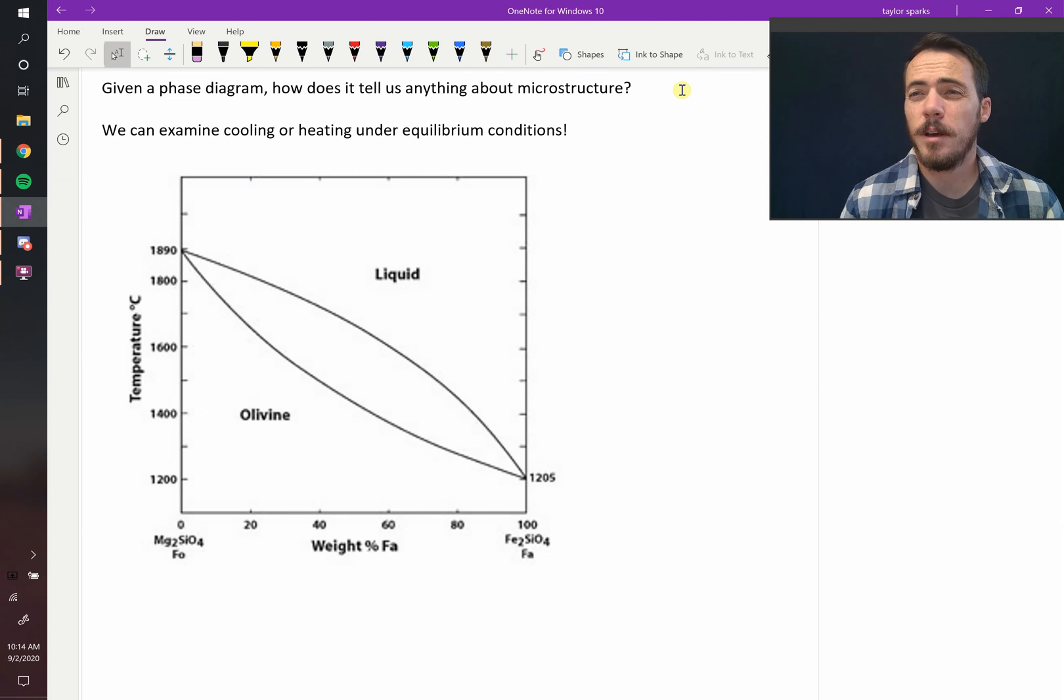We've said that phase diagrams tell us about the microstructure, meaning if you looked at this under a microscope and there's multiple phases, how do they come together, what do they look like? Let's talk about how we do that. To teach that, we have to introduce something called the lever rule.